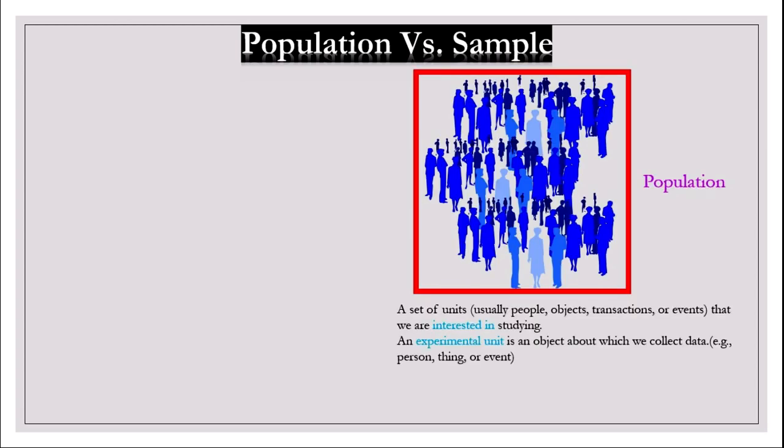What is a population? A population is a set of units, usually people, objects, transactions, or events that we are interested in studying. An experimental unit is an object, like a person, thing, transaction, or event, about which we collect data.